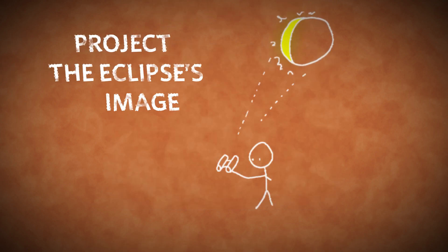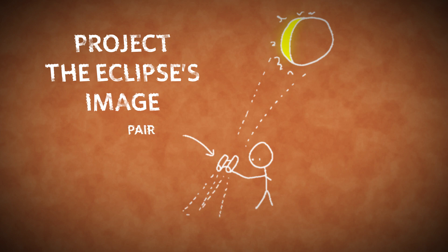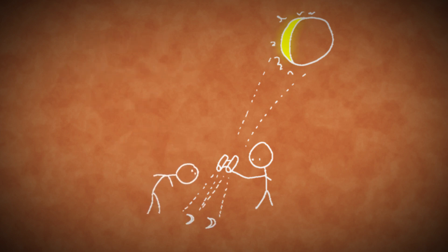The safest way to observe the eclipse is to project its image through either a telescope or a pair of binoculars focused to produce a sharp image. Remember, do not let anyone look through the device at the sun while you're doing this.